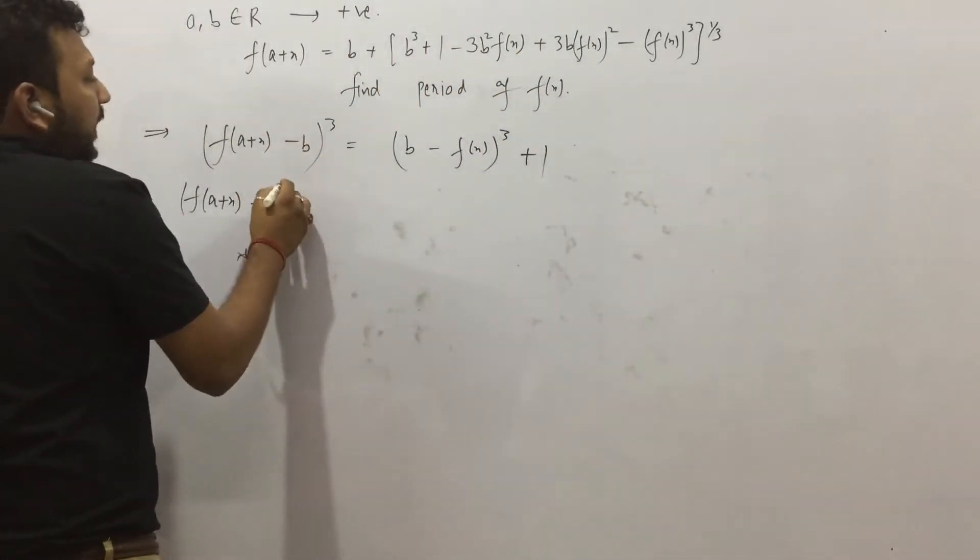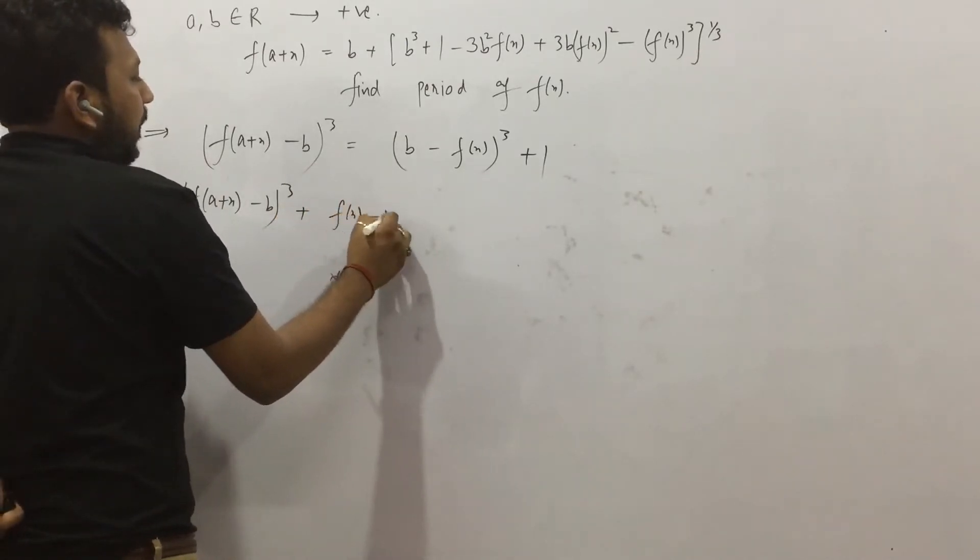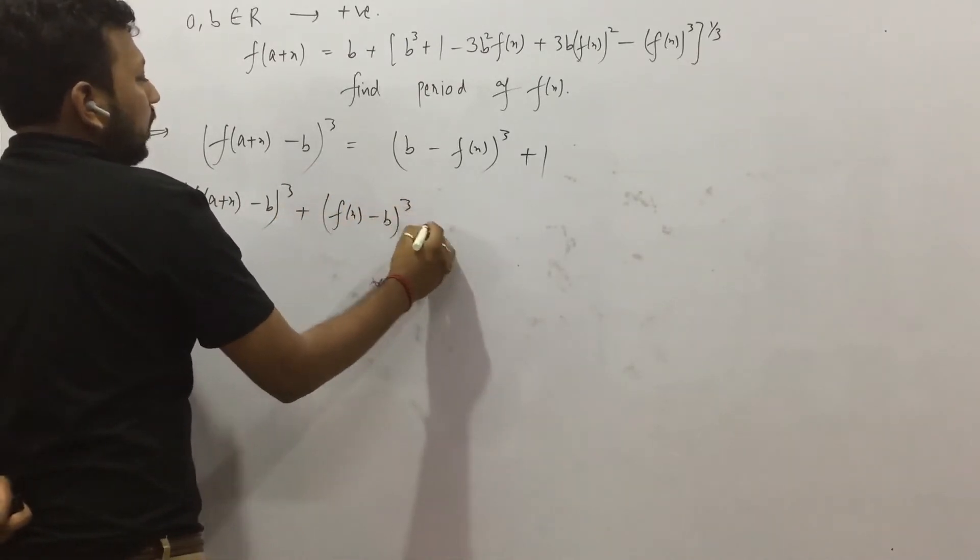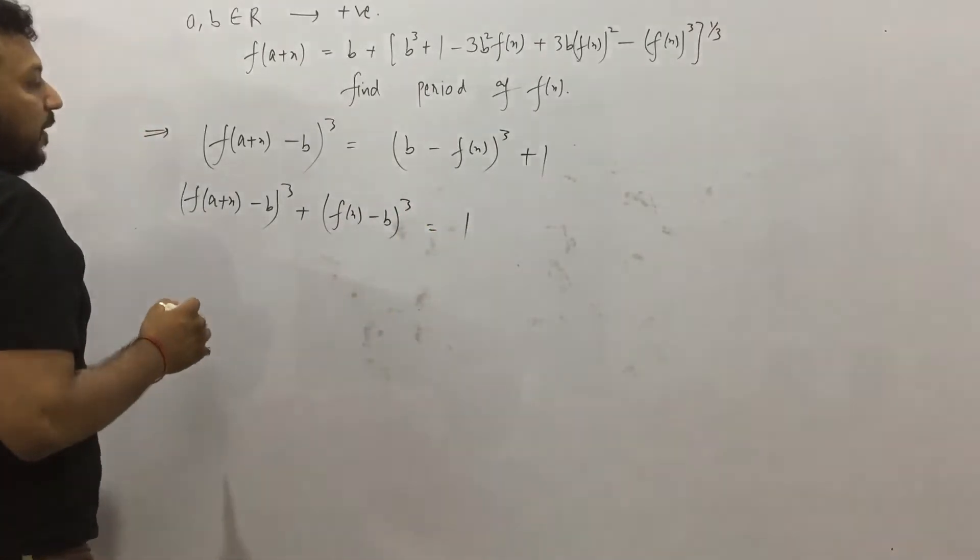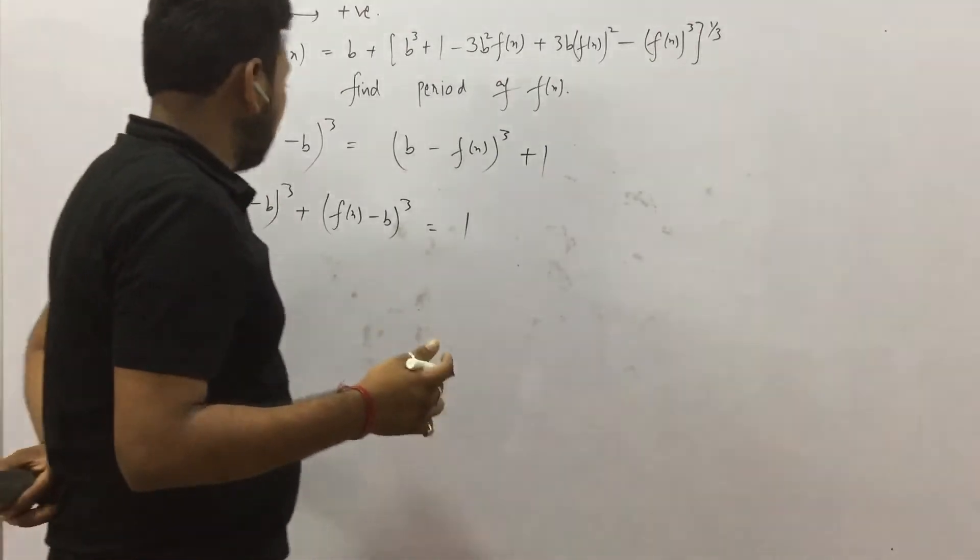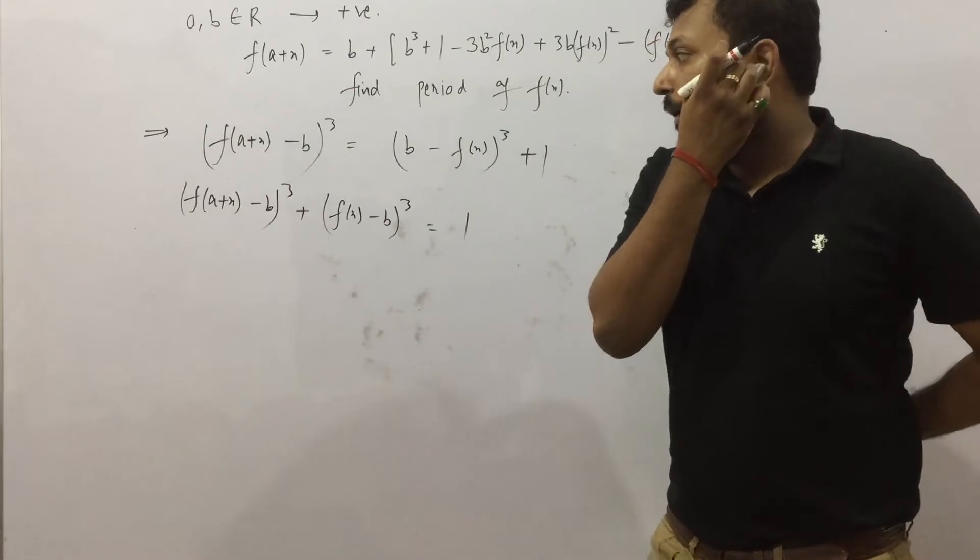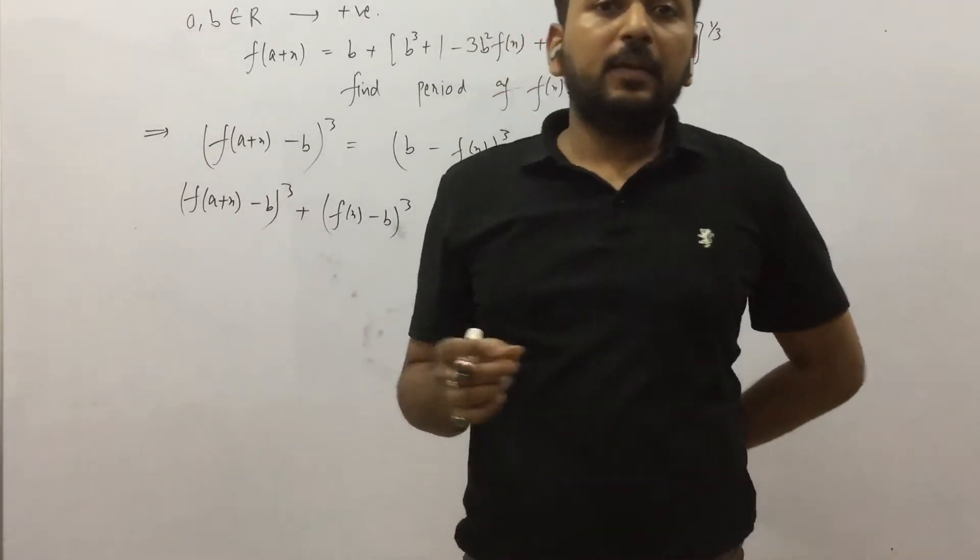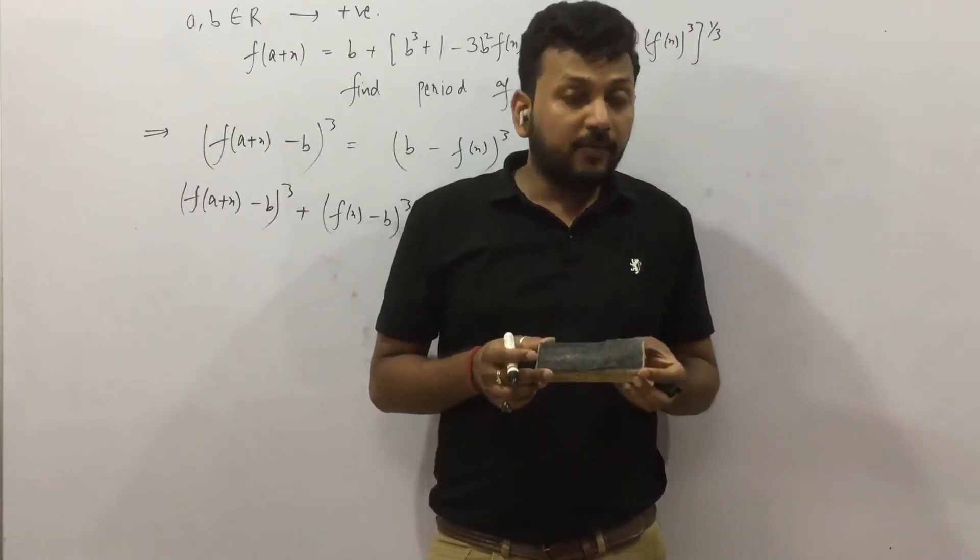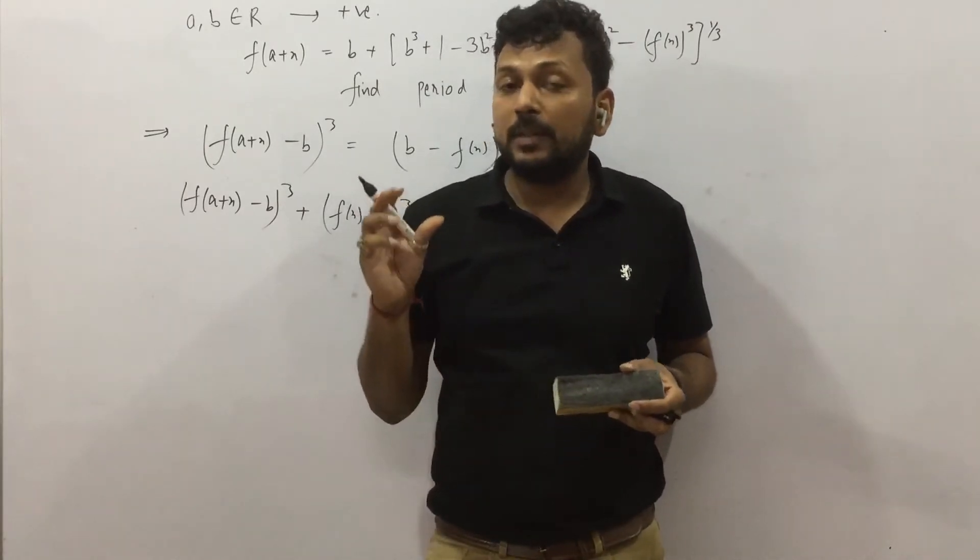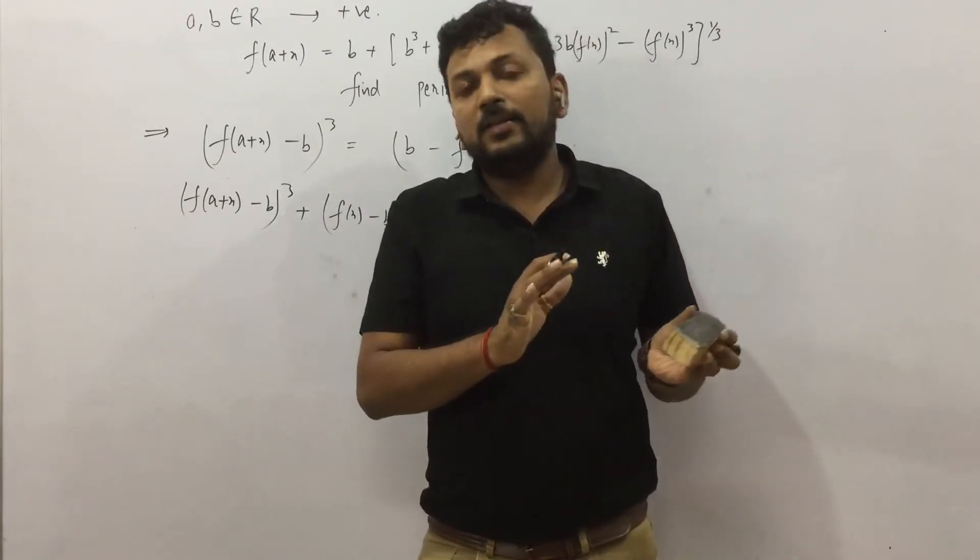So I can write this whole cube, and it becomes (f(x) - b)³ equals 1. I can write it like this. Now what I will do? I will replace x with x + a. So I will replace x with x + a, and since it is a dummy variable—I hope you know what a dummy variable is.